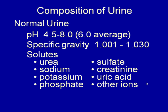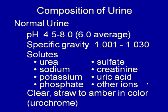Normally, urine should be clear and straw to amber in color. The color is the result of a pigment called urochrome.